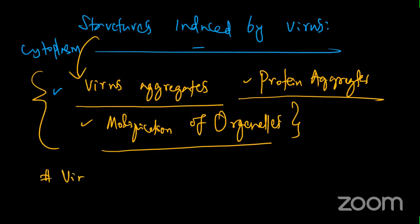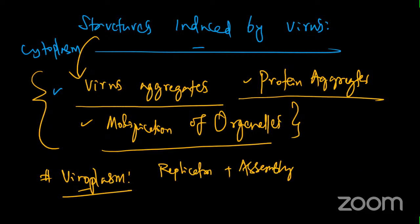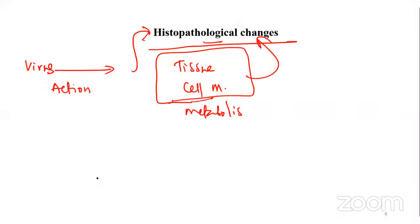Inclusion bodies are viral or viral-plus-host-derived material. They are byproducts produced during viral infection. Each virus produces a particular kind of inclusion body. Their diagnostic value is significant - since virus particles are around 200 nanometers and require electron microscopy to see, inclusion bodies visible under a normal microscope allow easy identification of the virus present.